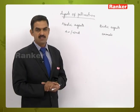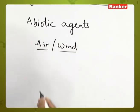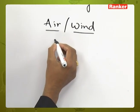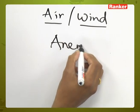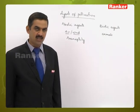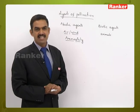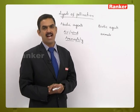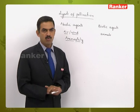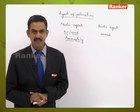In abiotic agents, let's first discuss air or wind as a type of agent. When air or wind acts as an agent of cross-pollination, we call it anemophily. Anemophily is a condition where air acts as an external agent for transfer of pollen grains from anther to stigma. Flowers showing anemophily have special characters to adapt to this condition.